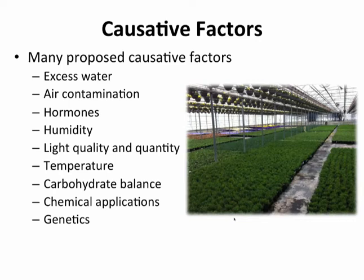Carbohydrate balance is another factor. As plants are perhaps in the transition from vegetative to reproductive growth, how is the plant partitioning or moving carbohydrates around — the photosynthates they are making — and how does that play into this? What's going on below ground? Are structures like tubers or enlarged roots being formed? That could certainly have a factor in the development of these disorders. Not to forget chemical applications — we're certainly applying plant growth regulators, and pesticides could also have a factor in the development of these.